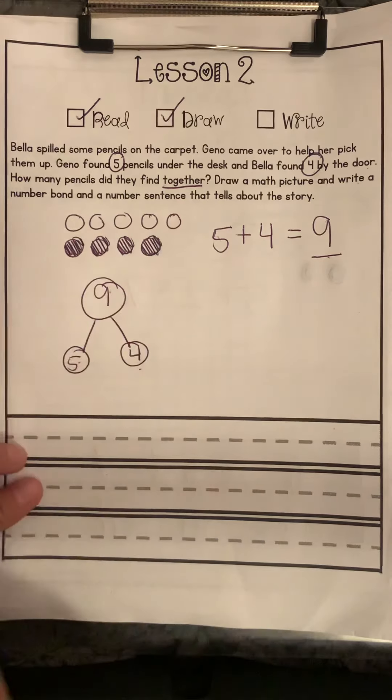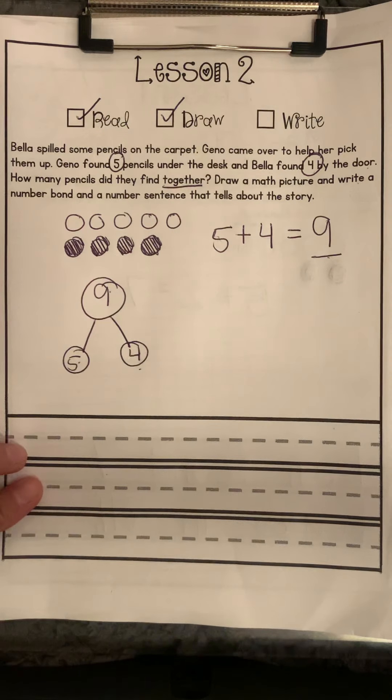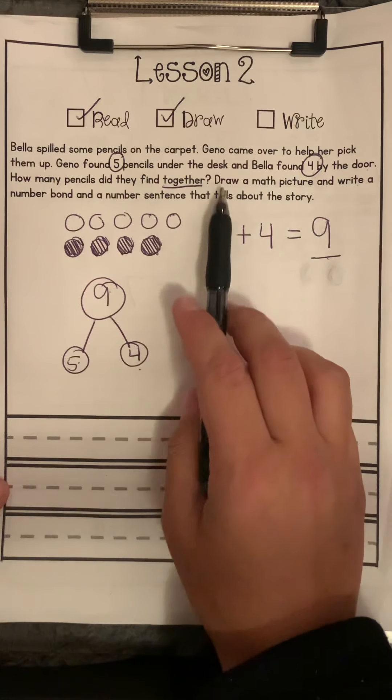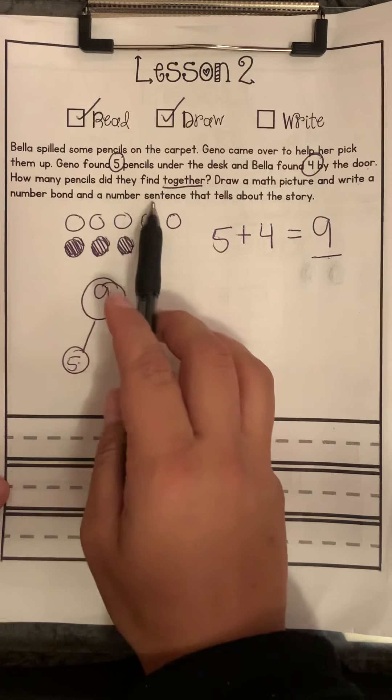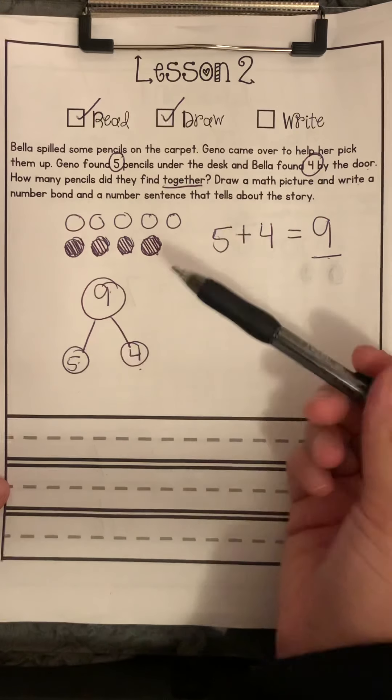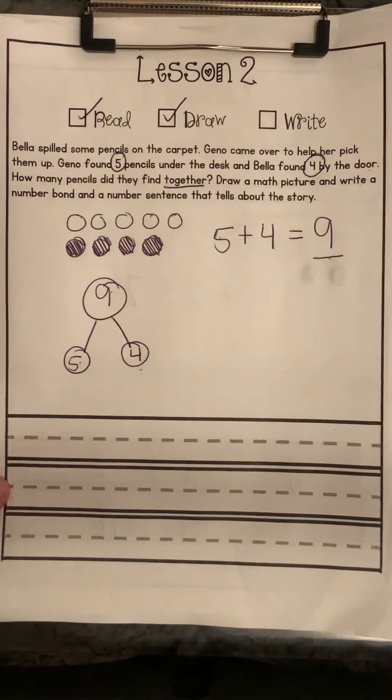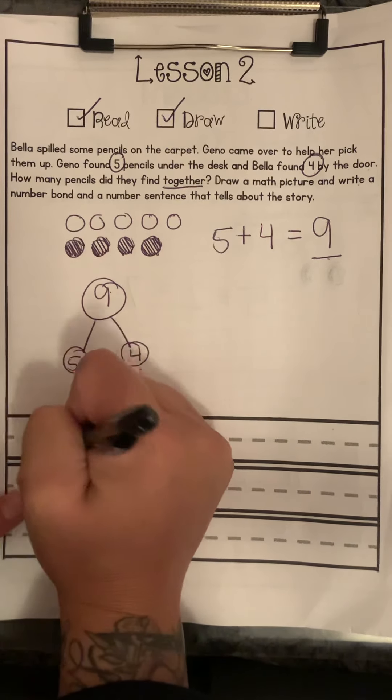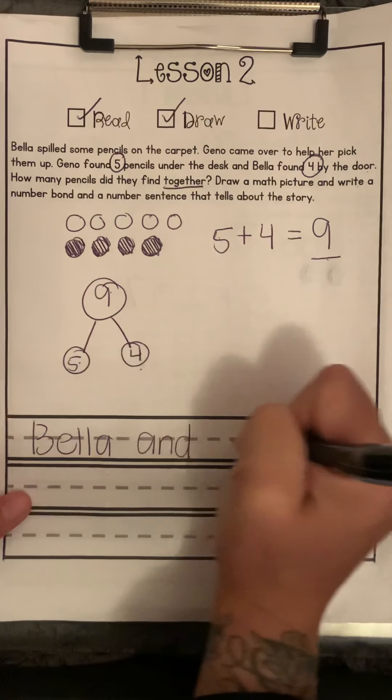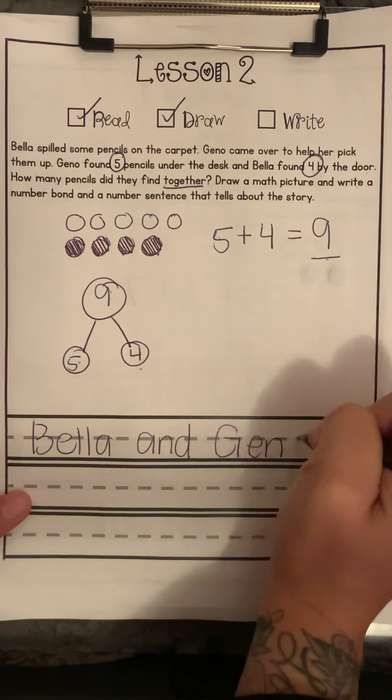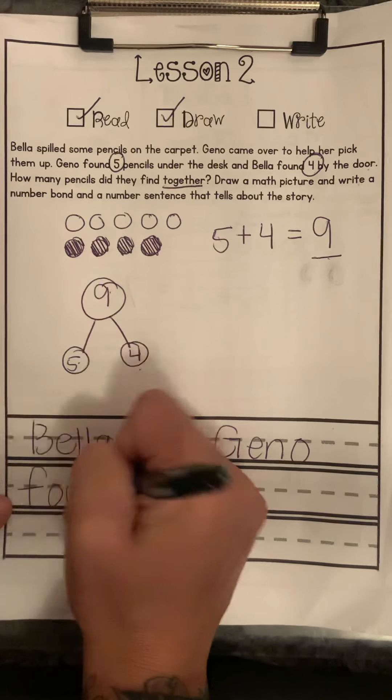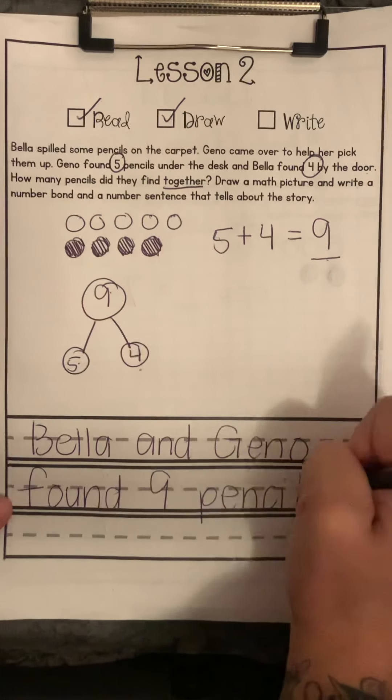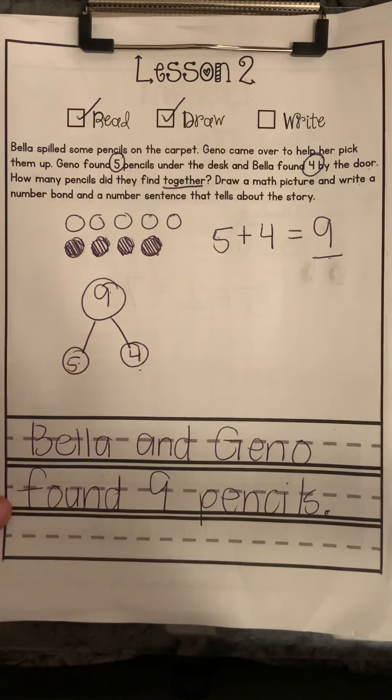So I read, I drew a picture, and now I'm going to write my answer on the lines that they've left for me. Draw a math picture, and write a number bond, and a number sentence that tells about the story. There's my number bond. There's my number sentence. And for extra, I'm going to say, Bella and Gino found nine pencils. All right. All right. Let's go.